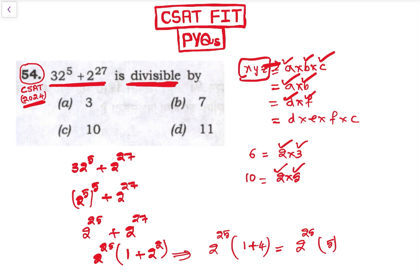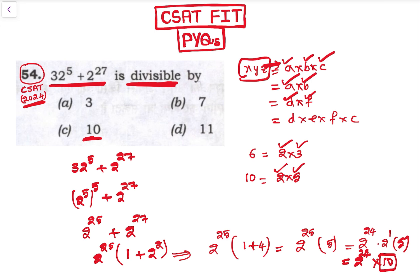Now 5 is not directly given as an answer option, but 10 is. So we rewrite 2²⁵ as 2²⁴ × 2¹, giving us 2²⁴ × 2 × 5, which equals 2²⁴ × 10. So 10 divides the number — this expression is divisible by 10.